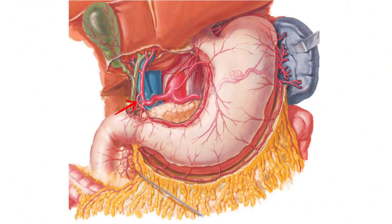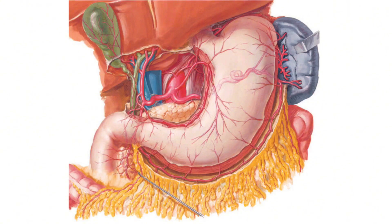The right gastric artery courses to the left along the lesser curvature of the stomach in the lesser omentum and terminates by anastomosing with the left gastric artery. The right hepatic artery usually passes posterior to the common hepatic duct, while the left hepatic artery usually passes anterior to the left hepatic duct. In Calot's triangle, the right hepatic artery gives off the cystic artery, which supplies the gallbladder.